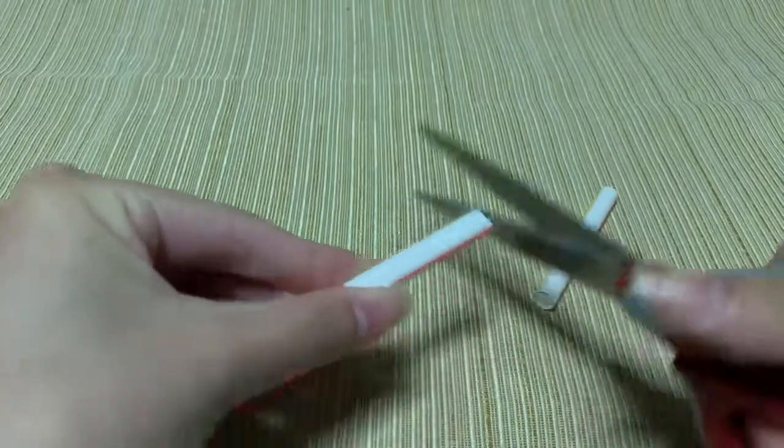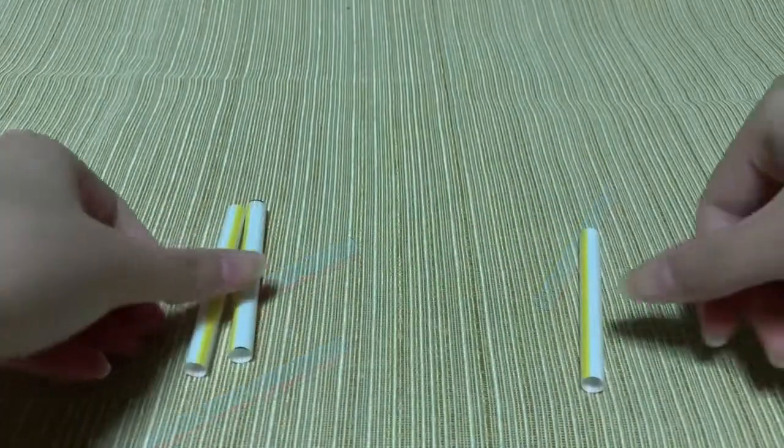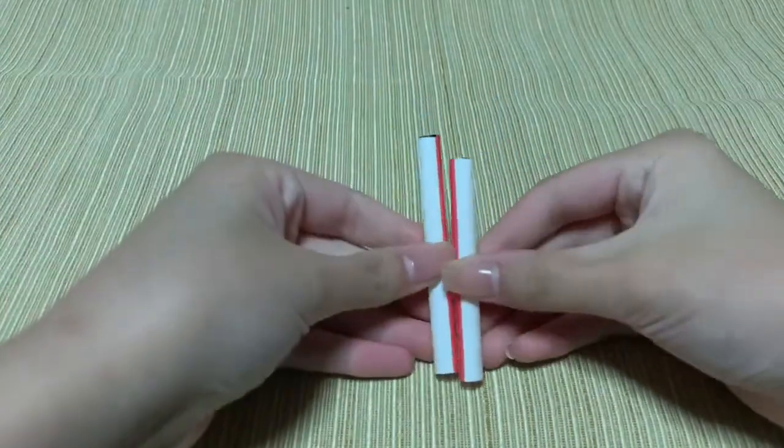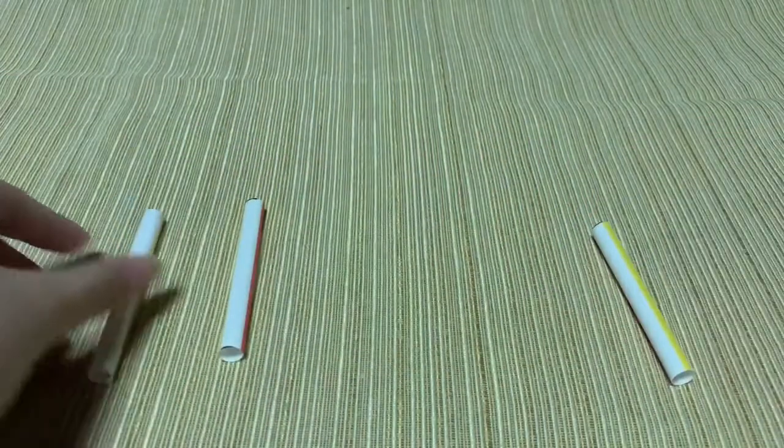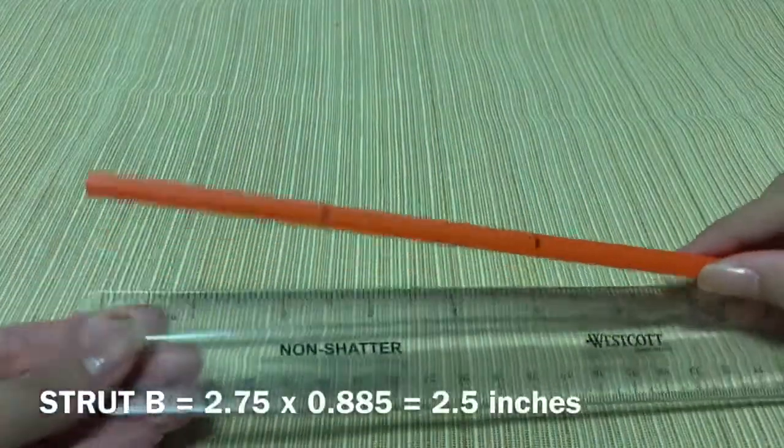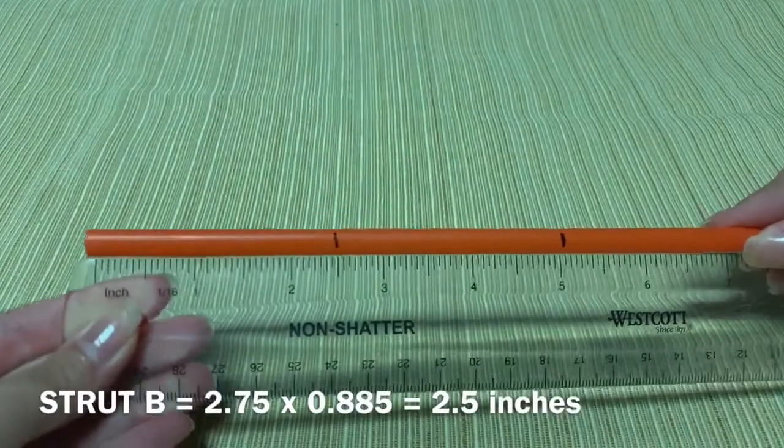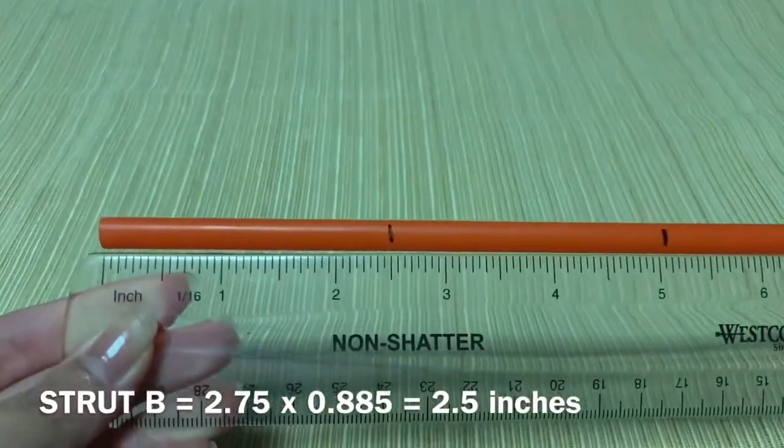Strut A will be longer than strut B, so take the length of your strut A and multiply it by 0.885 to find the length of strut B. If it ends up being a decimal, round to the nearest tenth. My strut B's will be 2.5 inches.